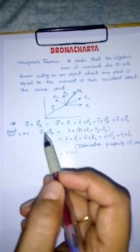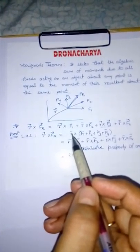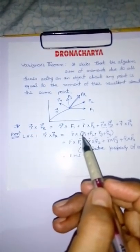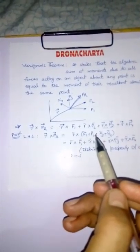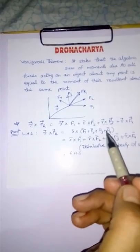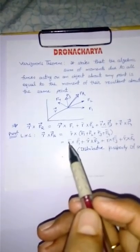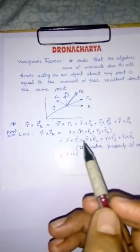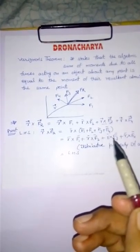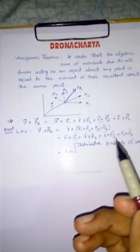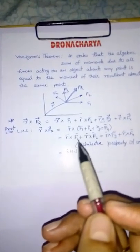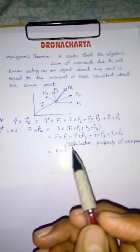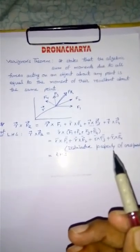That is r cross fr. r cross fr can be written as r cross (f1 plus f2 plus f3 plus f4). Now we can expand it like r cross f1 plus r cross f2 plus r cross f3 plus r cross f4, because cross product can be distributed. This is known as distributive property of cross product.